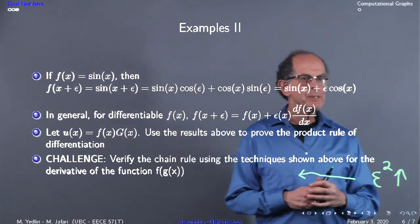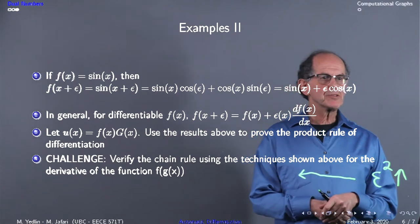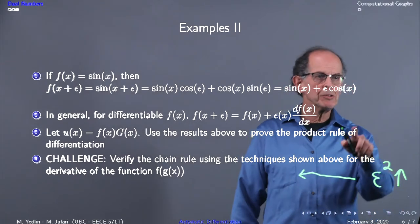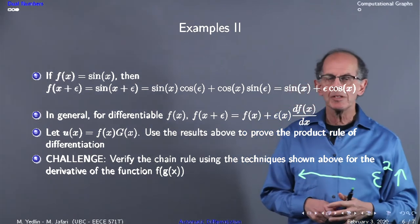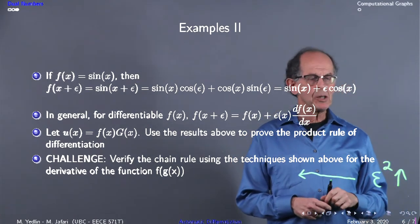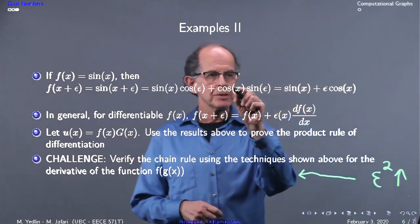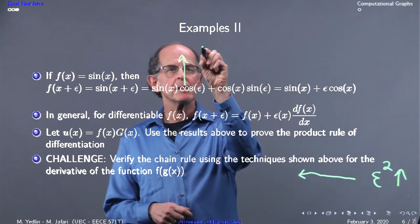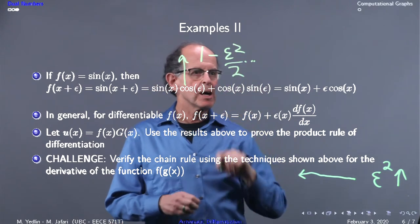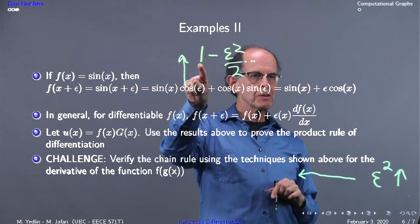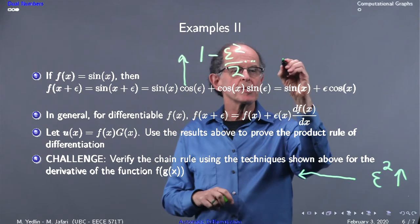Let's look at more complicated examples. If f(x) equals sine(x), then apply the addition formula and you get sine(x) plus epsilon cosine(x). We have cosine(epsilon), which is one minus epsilon squared over two, and that equals zero, so cosine(epsilon) is replaced by one.